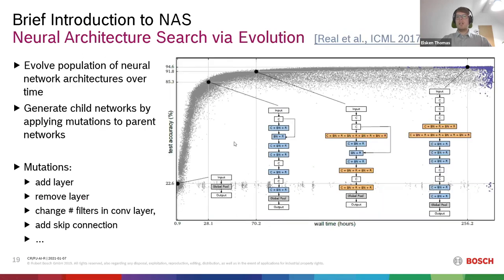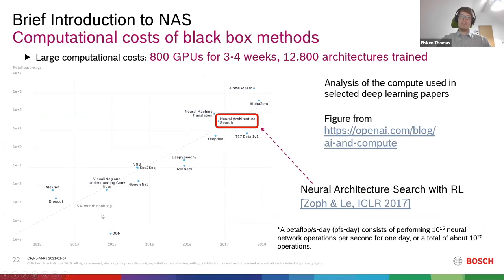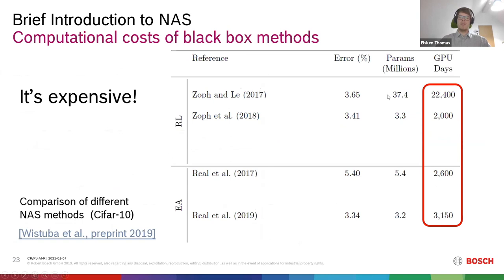Both evolutionary and reinforcement learning approaches are powerful but have the same problem: they train hundreds or thousands of architectures, which is very costly. The reinforcement learning paper trained almost 13,000 architectures on 800 GPUs for almost a month. This was ranked as one of the four most expensive deep learning papers by OpenAI, right behind AlphaGo and AlphaZero. So while these methods achieve good performance, they are too expensive to run in practice.